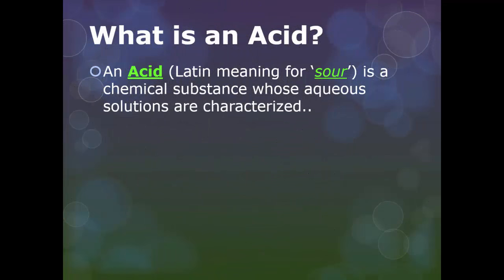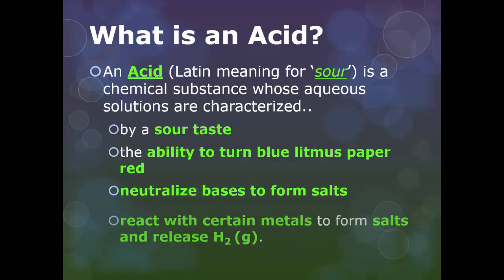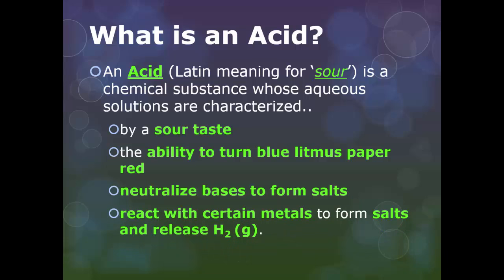So acid, which is the Latin word for sour, is a chemical substance whose aqueous solutions are characterized by their sour tastes, by their ability to turn blue litmus paper red. We'll be talking about litmus paper and indicators in a later lesson. We'll also be talking about how they can neutralize bases to form salts, like sodium chloride or magnesium chloride, and how they react with certain metals to form salts and also release hydrogen gas.